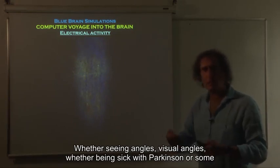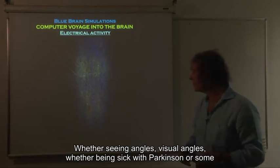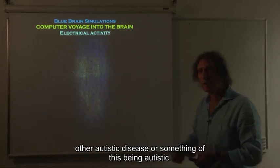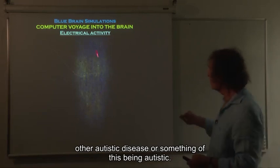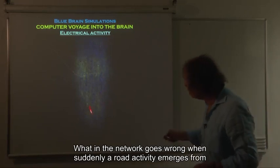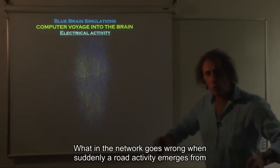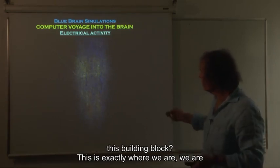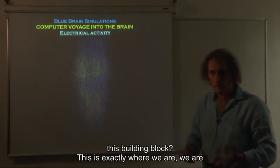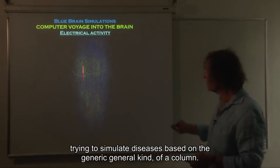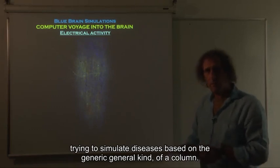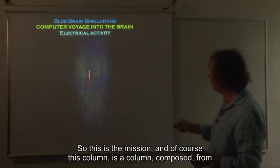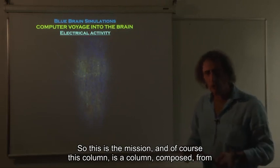Whether seeing angles, visual angles, whether being sick with Parkinson's or some other autistic disease or something like this, being autistic. What in the network goes wrong when suddenly a wrong activity emerges from this building block? This is exactly where we are. We are trying to simulate diseases based on a generic, general kind of a column. So this is the mission.